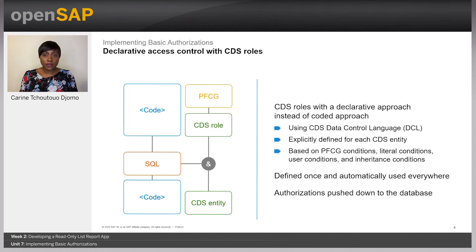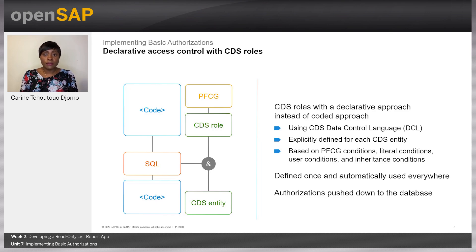As already mentioned in week 1, ABAP CDS provides a Data Control Language, in short DCL, for defining authorization access to the data using a CDS rule. The classical authorization approach used on the ABAP platform requires explicit coded authority checks on the selected data, which is stored in internal tables on the application layer. CDS DCL, instead, offers a declarative approach based on implicit authorization checks that occur during access attempts to the CDS entity.